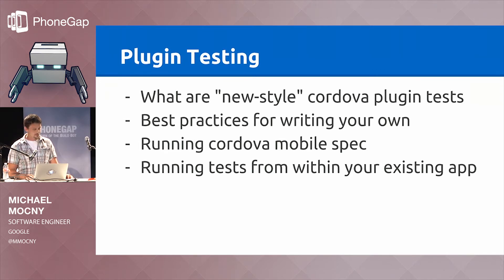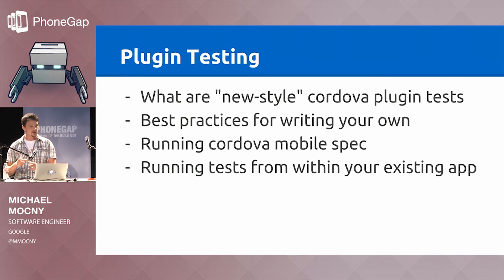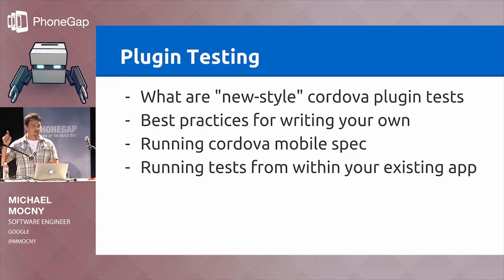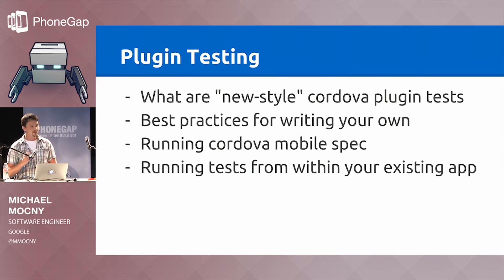Plugin testing is something near and dear to my heart recently. We have these new-style tests. We used to have this mobile spec — a single application you could run. We ripped all of the plugin-specific tests out of that single application into alongside-plugins. So when you install a Cordova plugin now, especially the core plugins, they come alongside a test suite to test that plugin. It's not installed into your app by default, but the tests are there. If a plugin isn't working on a particular device, there is a way to run the test suite and see if it's the test suite failing — is it specific to the device, or is it your application?